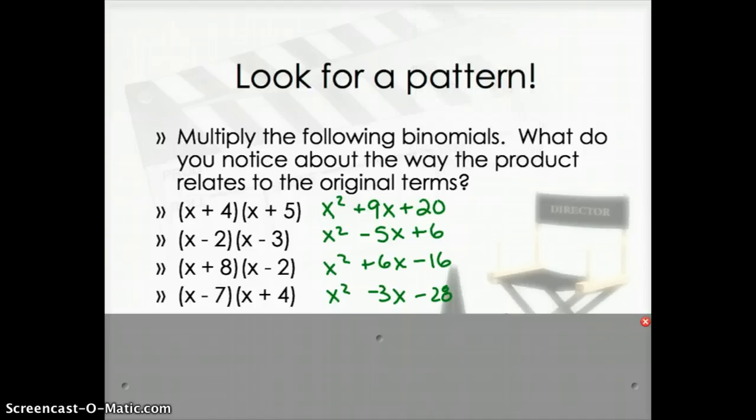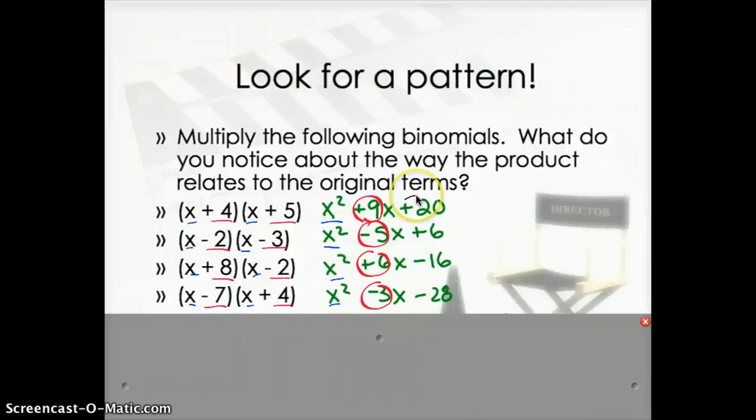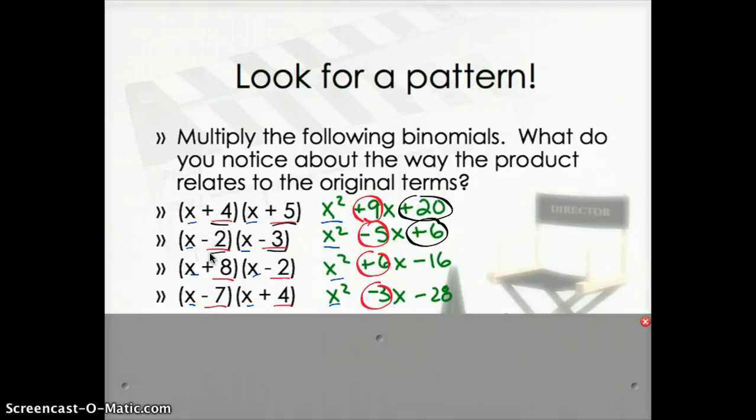I'm really hoping that you can see something that's going on here when you look. Because we just have x and x at the beginning of each of these, all of our final products just start with x squared. What I want you to try to see is how does this number relate to these numbers. Every time this number relates somehow to those numbers. This number relates somehow to those numbers. I hope you have a thought, you have a guess what it is, what's happening with those two numbers to get that middle term.